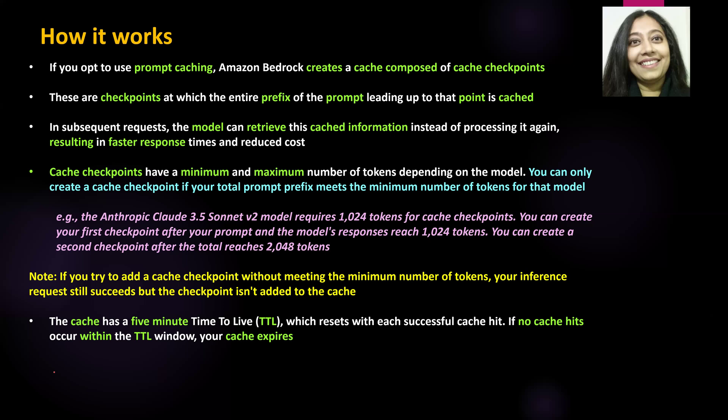If you do not meet the requirement for minimum number of tokens, even though you tell the model to create a cache checkpoint or enable prompt caching, it will still not be added to the cache. You can only create a cache checkpoint if your total prompt prefix meets the minimum number of tokens for that particular model. Your prompt has to be big enough, and your inference also has to be big enough to meet the minimum number of tokens required depending on the model.